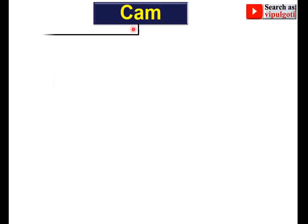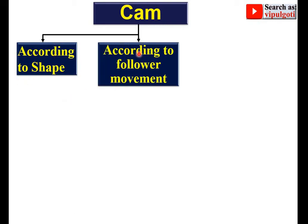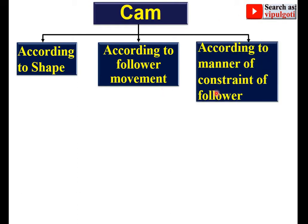Basically, a cam is classified in three different ways: first, according to shape; next, according to the follower movement; and next, according to the manner of constraint of the follower. Now let's see one by one.